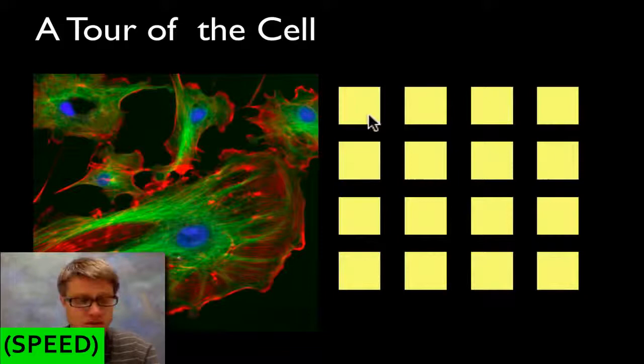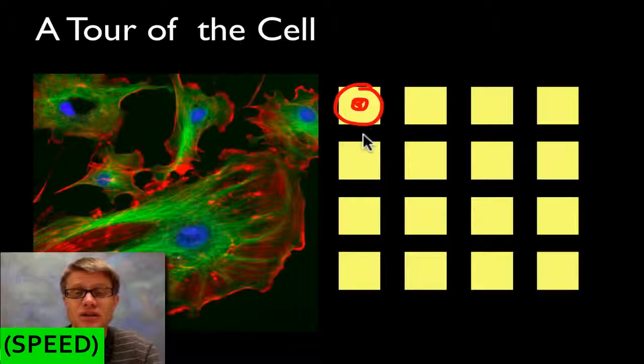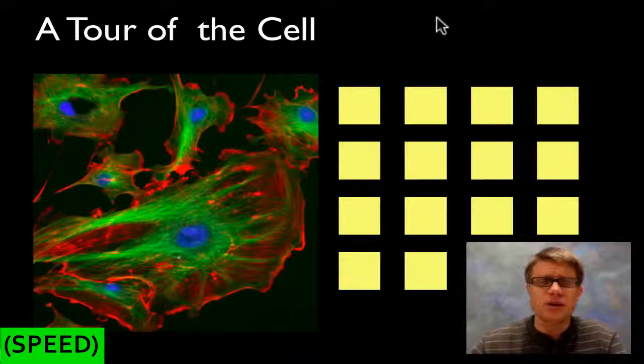And you also might think to yourself, well why aren't they infinitely small? Why are they really, really tiny? Well the reason why is that the material inside a cell, the information inside the cell, like the DNA and the machinery of the cell, has to be able to fit inside the cell. And so there's like a perfect sweet spot in size for all the different types of cells that we have.